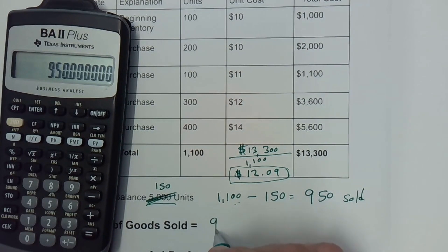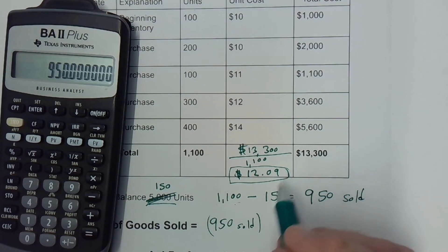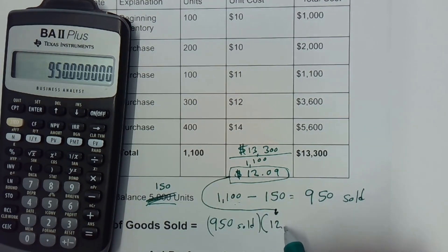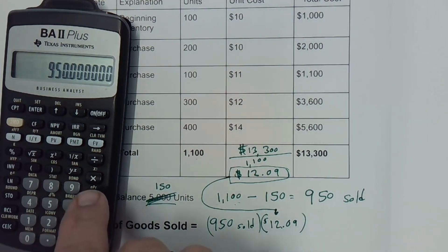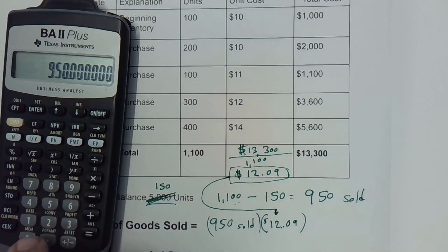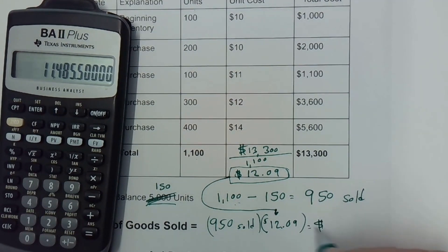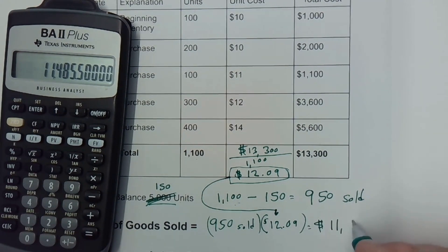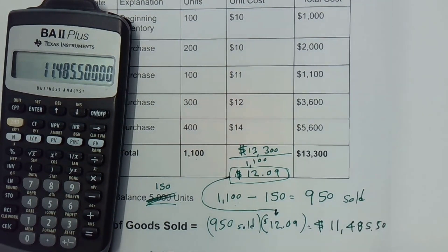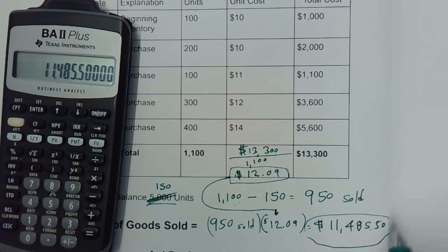We have 950 units sold, and we're going to multiply that by our weighted average cost per unit of $12.09. That gives us our cost of goods sold: 950 times $12.09 equals a cost of goods sold of $11,485.50.